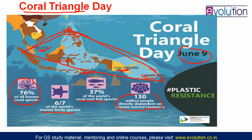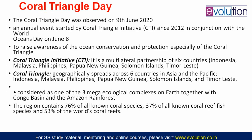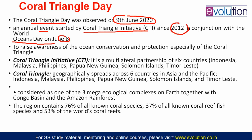On June 9th every year, Coral Triangle Day is celebrated by these six countries. Though they celebrate for the triangle, the awareness they create is for worldwide coral — including Australia's Great Barrier Reef. World Ocean Day is celebrated on June 8th, so these countries decided to celebrate Coral Triangle Day on June 9th, just one day after. The aim is to raise awareness of ocean conservation and protection, especially of the coral triangle.